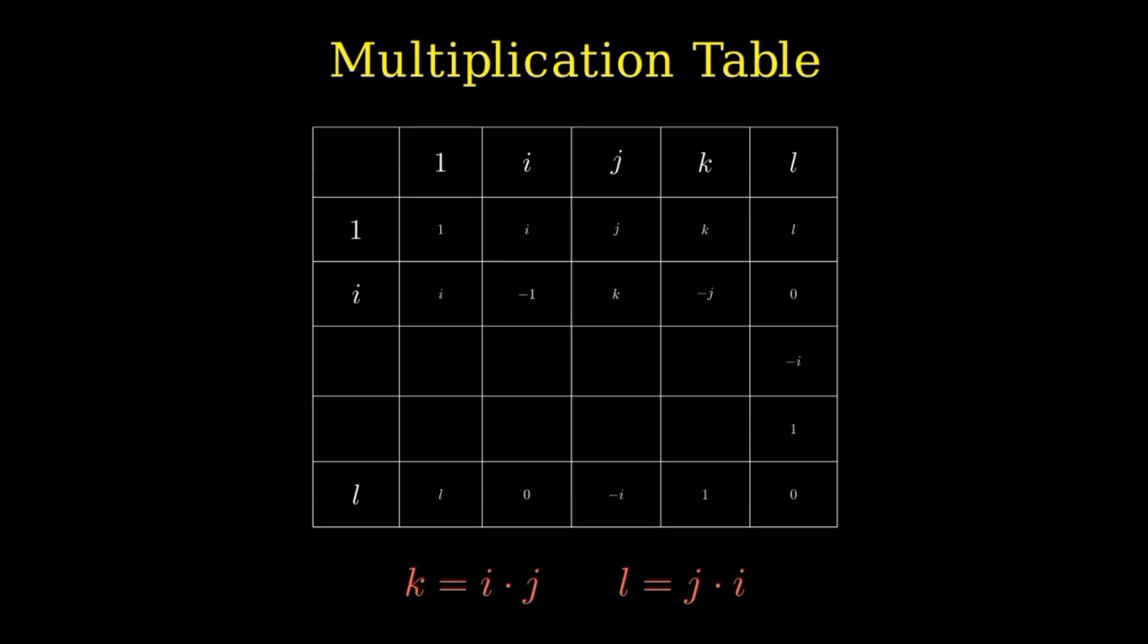In the third row for J, J times I equals L, J times J equals negative one, J times K equals zero, J times L equals negative I. In the fourth row for K, K times I equals negative J, K times J equals negative I, K squared equals zero, K times L equals one. And finally in the fifth row for L, L times I equals zero, L times J equals negative I, L times K equals one, L squared equals zero.